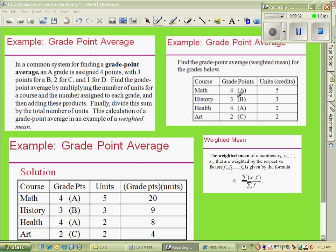In a common grading system for finding a grade point average, an A grade is assigned 4 points, a B is assigned 3, 2 for a C, and 1 for a D. Find the grade point average by multiplying the number of units for a course by the number assigned to each grade, then adding these products. Finally, divide the sum by the total number of units. This calculation is an example of a weighted mean. This is how your grades have been calculated all your life, whether or not you knew how to do it.